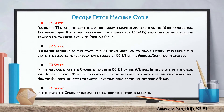In T1 state, the content of the program counter are placed on the 16-bit address bus. In T2 state, the RD signal goes low to enable memory. In T3 state, the opcode is placed on the address-to-data bus, and the opcode is transferred to the instruction register of the microprocessor. In T4 state, the opcode which was fetched from the memory is decoded.